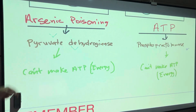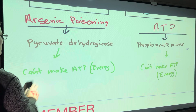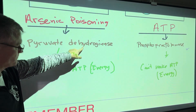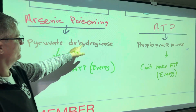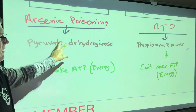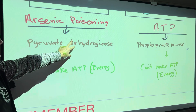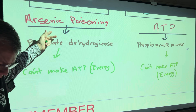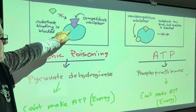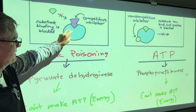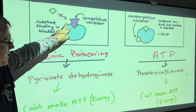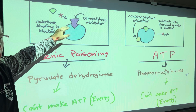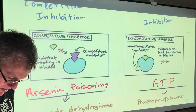An example of competitive inhibition is arsenic poisoning. Arsenic will fit into the active site of pyruvate dehydrogenase. Both of the enzymes we're going to talk about help our bodies make ATP for energy. If arsenic binds, pyruvate dehydrogenase becomes inactive and ATP formation stops. If that stops for any length of time or altogether, it's death.